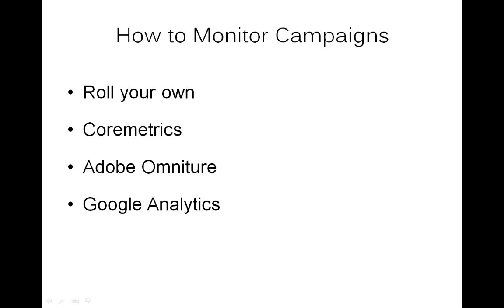Now it's time to dig into actually monitoring your Amazon Product Ads campaign. The first step is how to monitor your campaigns — there are four choices. Obviously, from the title of this presentation, we're going to focus heavily on Google Analytics. The other options are 'roll your own' by looking at web logs, and two paid options: CoreMetrics and Adobe Omniture. Those are great solutions but somewhat expensive, so instead we'll focus on Google Analytics today.